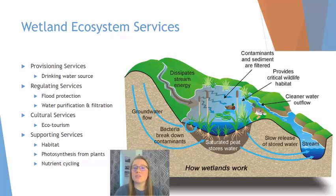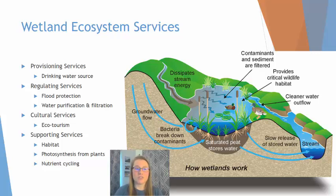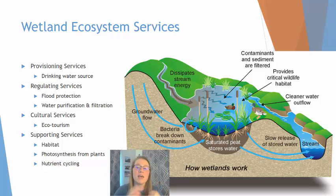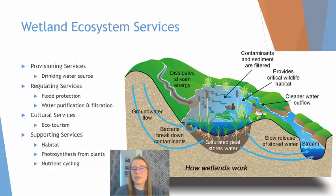Some of the ecosystem services — remember there are four categories — include providing a drinking water source for humans as a provisioning service. A regulating service would be flood protection. Wetlands absorb a huge amount of water during rain events and then slowly release that back into the environment downstream, which protects homes downstream from experiencing large flood events. Another regulating service would be water purification and filtration, which again serves as a drinking water source, the provisioning service.